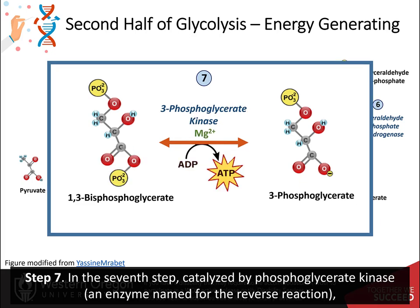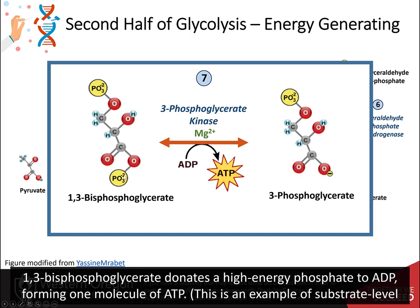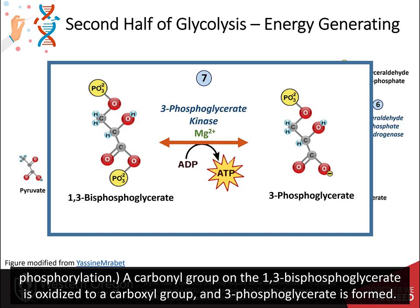Step seven. In the seventh step, catalyzed by phosphoglycerate kinase — an enzyme named for the reverse reaction — 1,3-bisphosphoglycerate donates a high-energy phosphate to ADP, forming one molecule of ATP. This is an example of substrate-level phosphorylation. A carbonyl group on the 1,3-bisphosphoglycerate is oxidized to a carboxyl group, and 3-phosphoglycerate is formed.